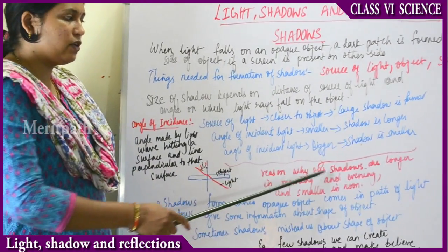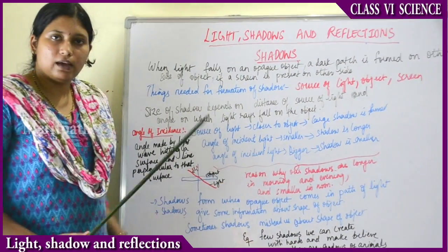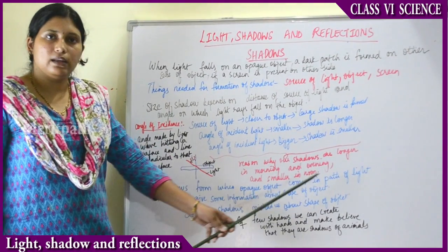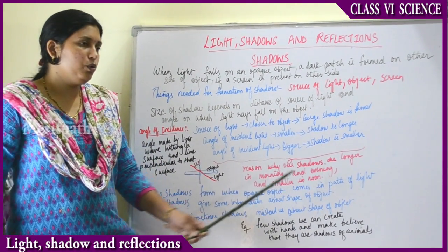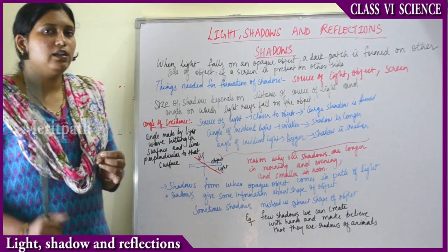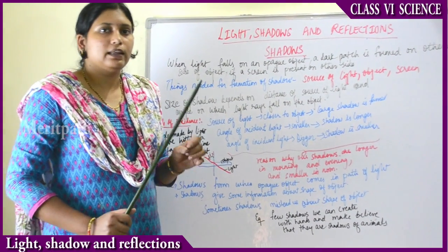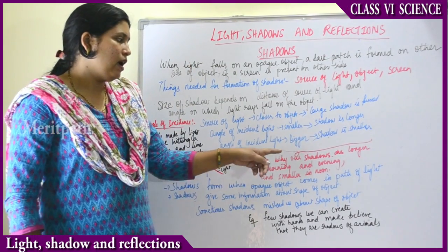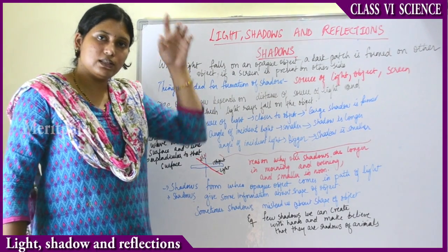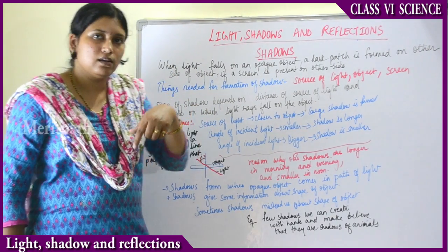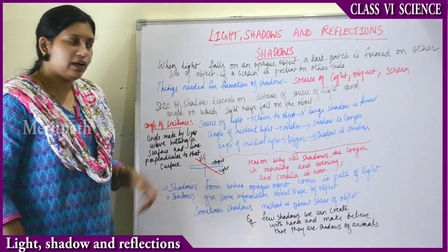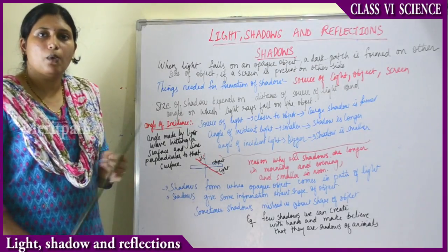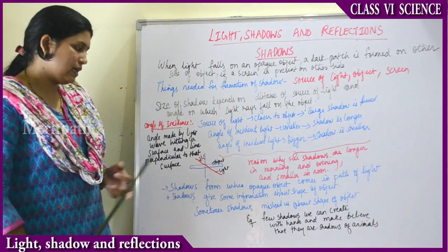This explains why our shadows are longer in the morning and evening and shorter at noon. In the afternoon when there is very strong sunlight, our shadows are smaller, whereas in the mornings and evenings our shadows are longer — because both the distance from the sun and the angle of incidence matter. This explains why our shadows are of different sizes in the morning, afternoon, and evening.